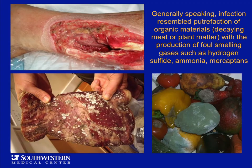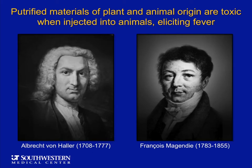It was not lost on people, even from ancient times, that infections resembled the putrefaction of organic material — both producing odors like hydrogen sulfide, ammonia, and mercaptans — and it was suspected that putrefying material developed a toxin of some kind, which came to be called the putrid poison. Albrecht von Haller and François Magendie systematically ground up spoiled meat or vegetables and injected animals with extracts. As none of us would be surprised, the result was extremely toxic — something very toxic is associated with rotting organic material — but they could go no further in characterizing it.